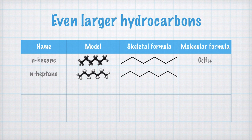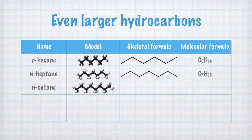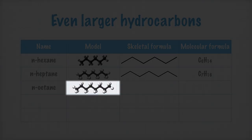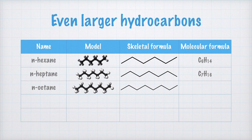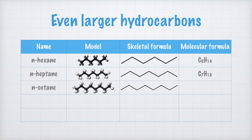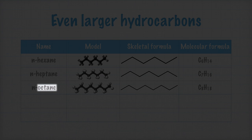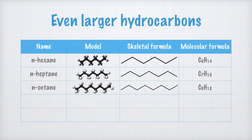N-octane consists of eight carbon atoms, and just like the previous hydrocarbons, there are hydrogen atoms on every carbon atom. We write the skeletal formula like this, showing eight carbon atoms. Since there are two hydrogen atoms on each of the middle carbon atoms and three hydrogens on each of the end carbons, there is a total of 18 hydrogen atoms, and the molecular formula for octane is C8H18. And by the way, this octane is the same octane that is used as a reference in octane rating of engine or aviation fuel — that's petrol if you're British, or gasoline if you're American.